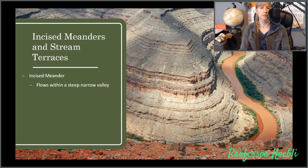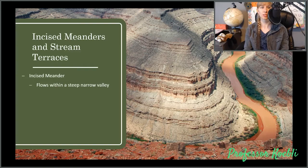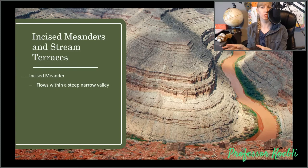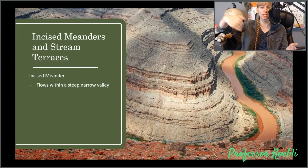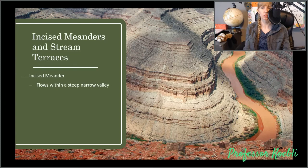Let's say you get a meandering stream and then all of a sudden base level drops. Now we're going to get incised meanders and stream terraces. The Grand Canyon is a wonderful example of incised meanders where base level has dropped and so the stream starts to cut back down. You get this meandering stream within the Grand Canyon.